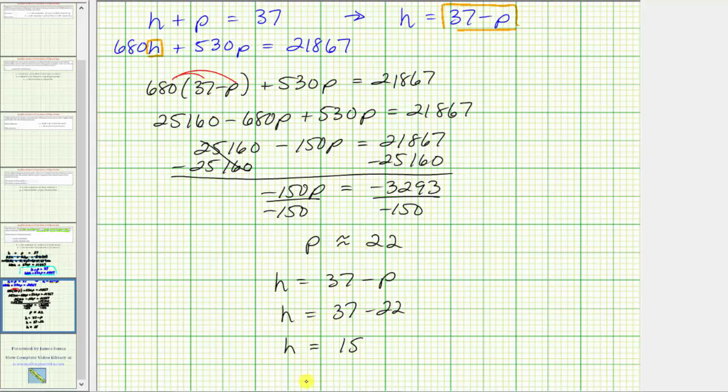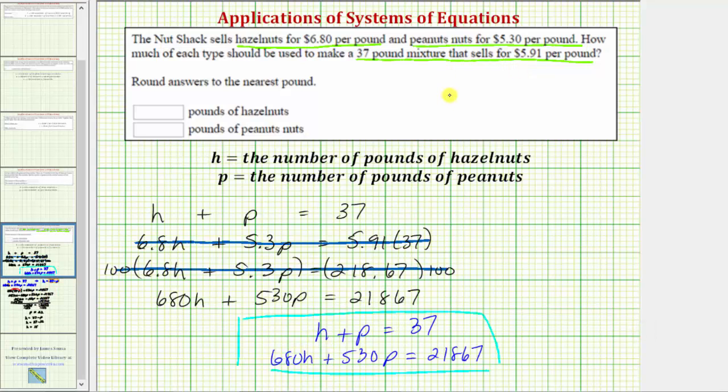So now we know the mixture contains approximately 22 pounds of peanuts and 15 pounds of hazelnuts. So going back to the first slide, we just found h is equal to 15 and p is equal to 22, or at least approximately, and therefore the mixture has 15 pounds of hazelnuts and 22 pounds of peanuts. I hope you found this helpful.